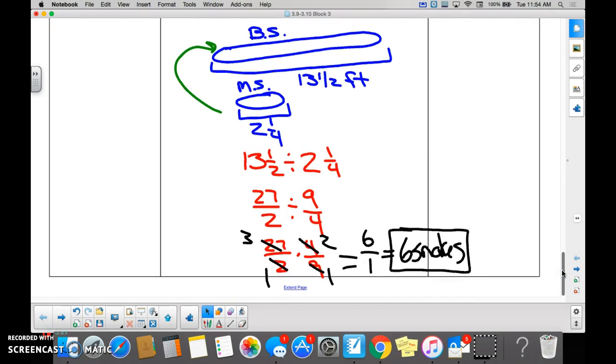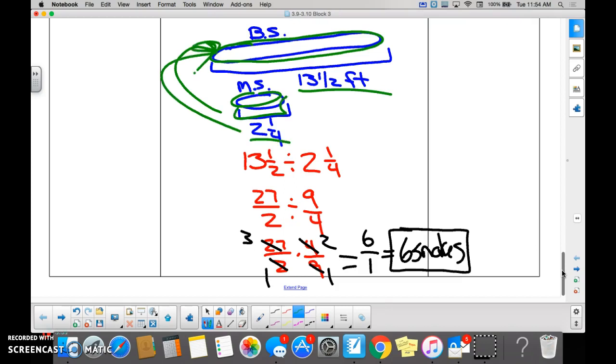And if you were struggling with understanding what the division problem would be, I suggested you draw a picture. So here's Bob's snake, how big is Bob's snake, you guys? Thirteen and a half feet. Thirteen and a half feet, right? How big was Mary's snake? Two and one-fourth. Two and one-fourth. So how many of these guys fit into Bob's snake?